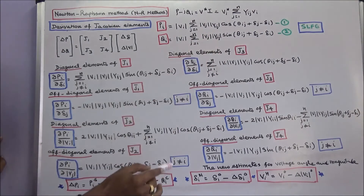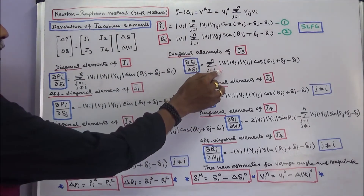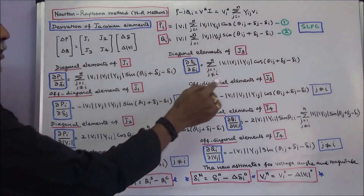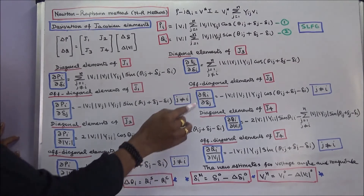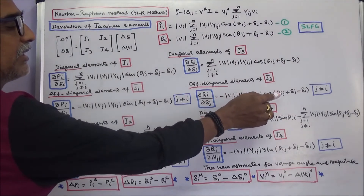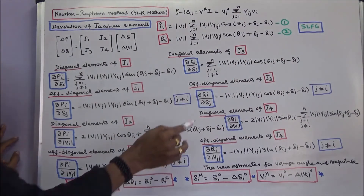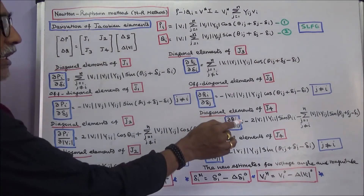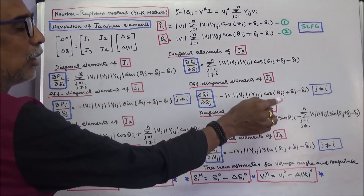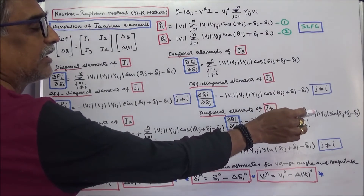Diagonal elements of J3: ∂Qi/∂δi is equal to sigma (j=1 to n, j≠i). Off-diagonal elements of J4: ∂Qi/∂|Vj| is equal to minus 2|Vi||Yii| sin(θij + δj − δi), for j not equal to i.